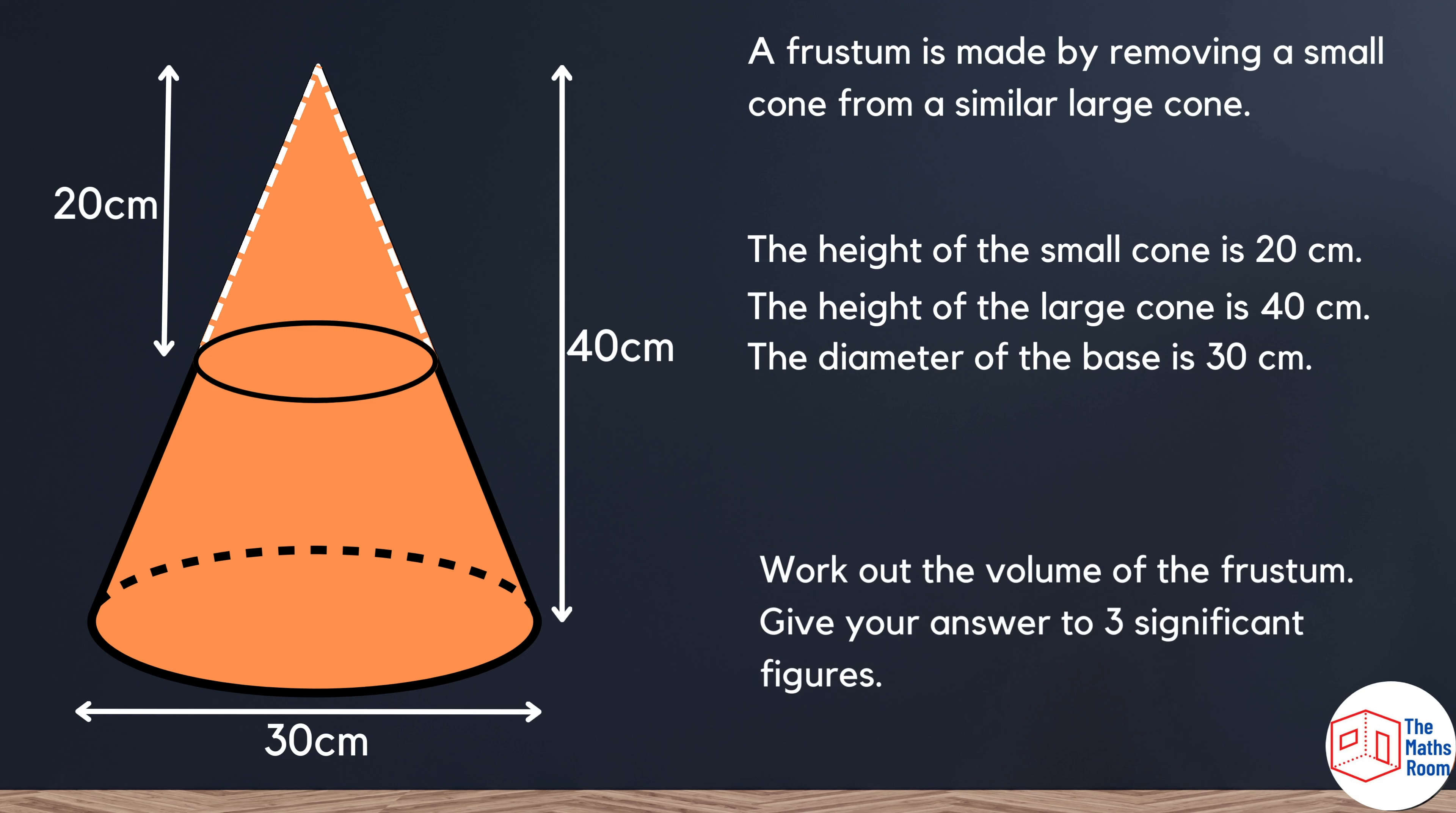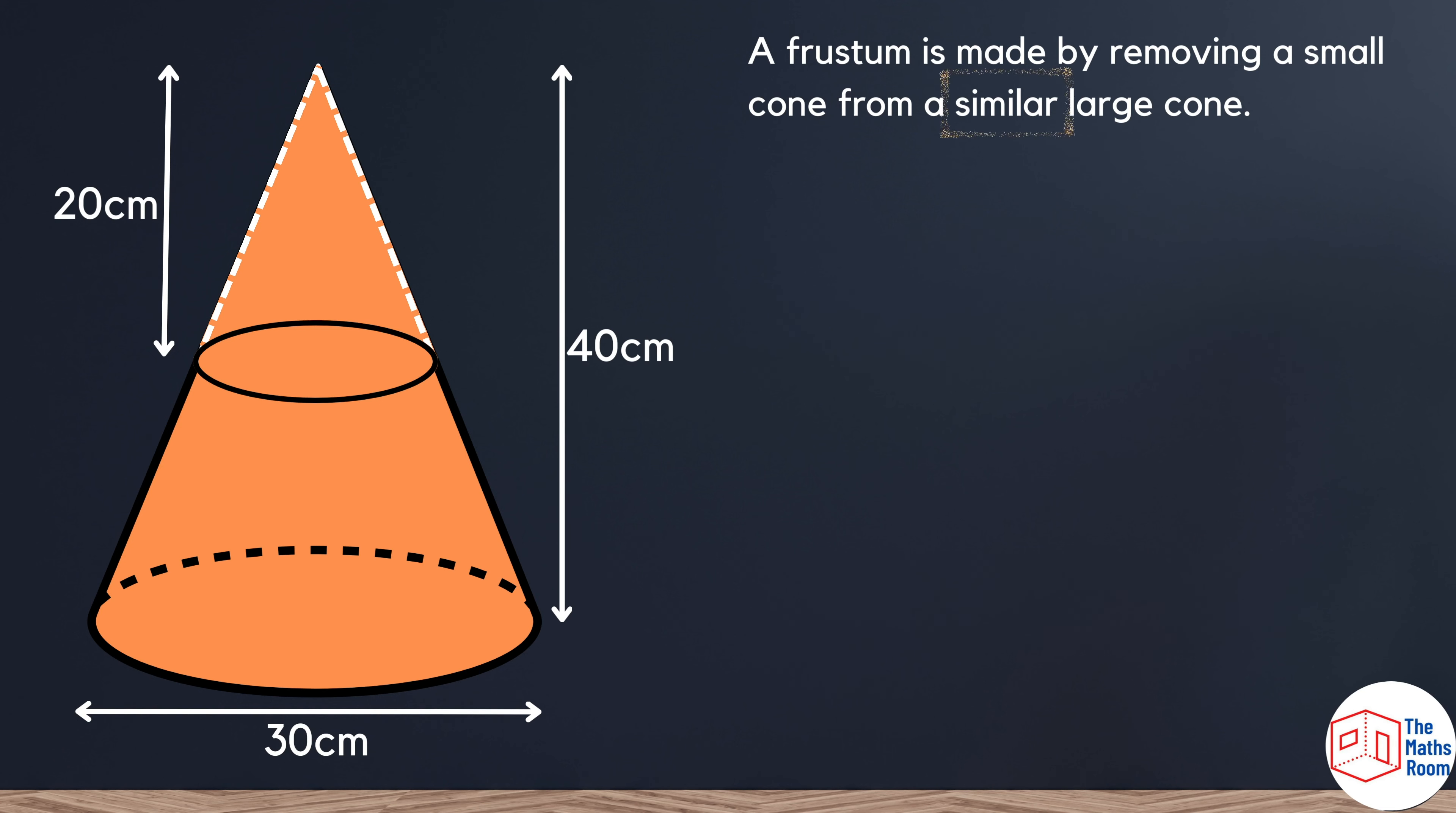We need to give our answer to three significant figures. If we look at that first opening line, they give us a very important word. They say that the small cone is similar to the large cone, so we can use properties of similar shapes to work out any details that might be missing.